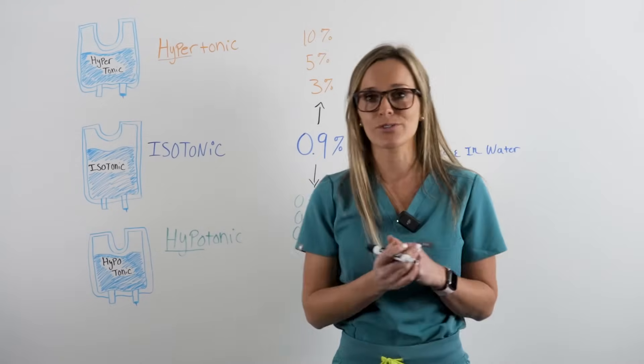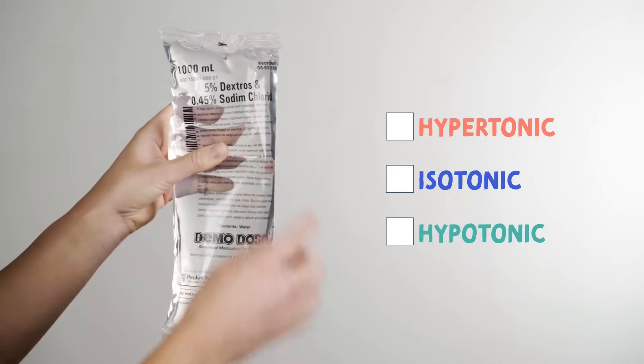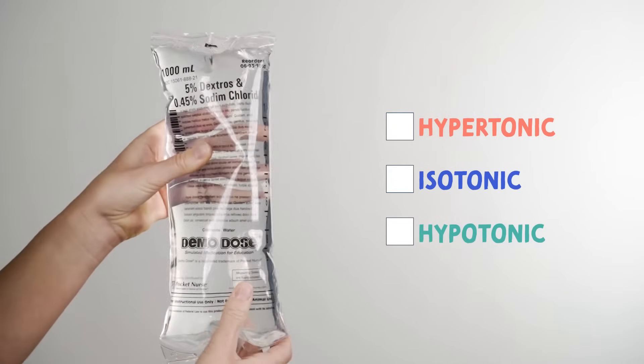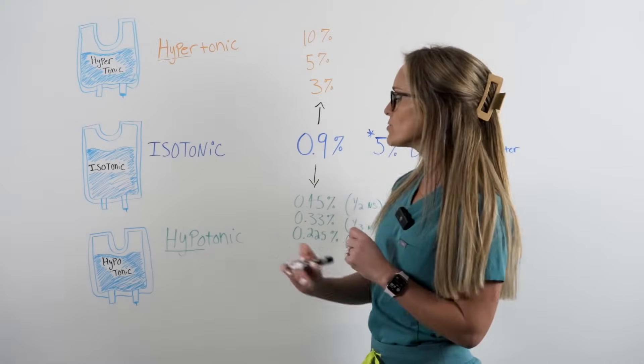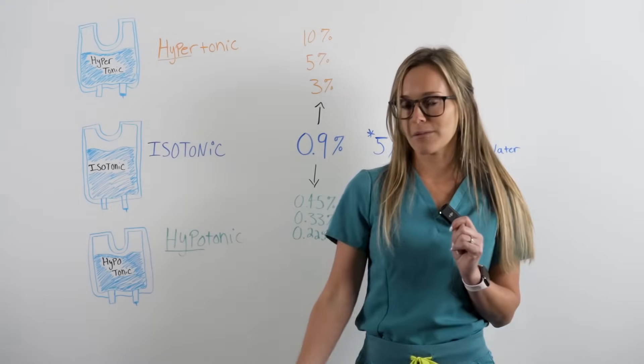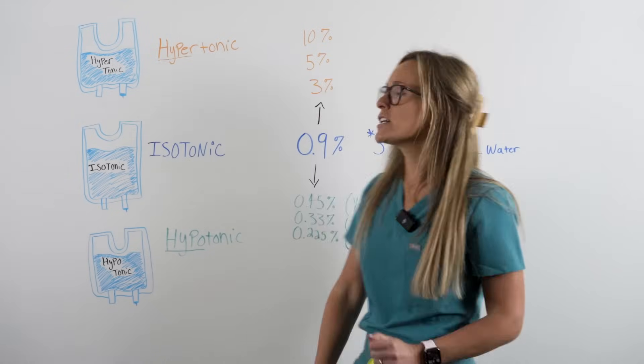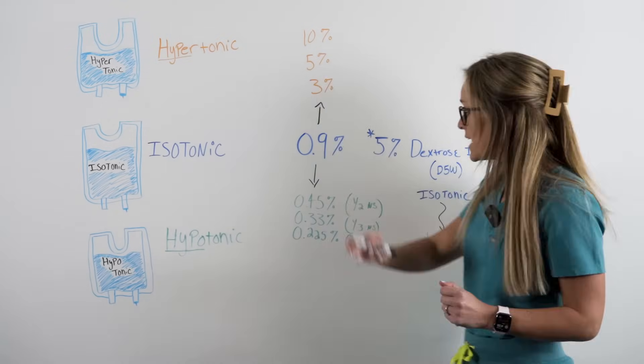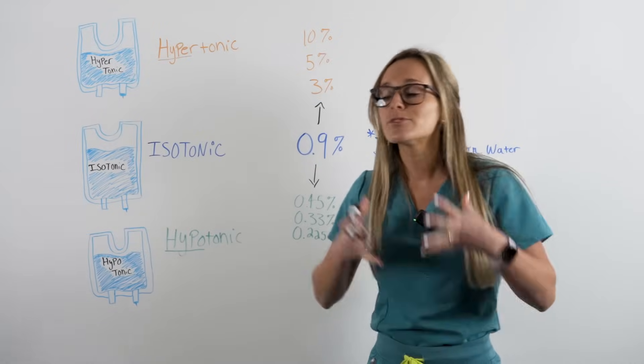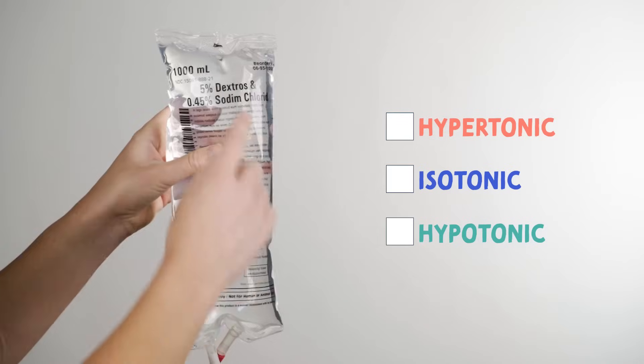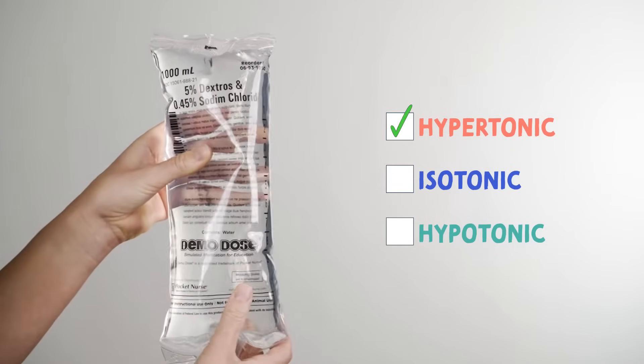How about 5% dextrose and 0.45% sodium chloride? Is this a hypertonic solution, an isotonic solution, or a hypotonic solution? Don't let this one confuse you because we have 5% in the name and a 0.45% in the name, but it's whatever the name starts with. So it starts with 5% making it a hypertonic solution.